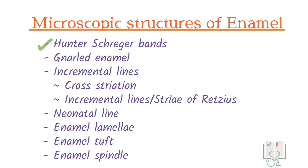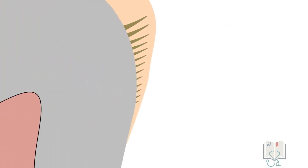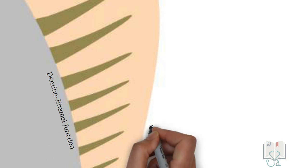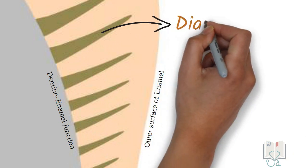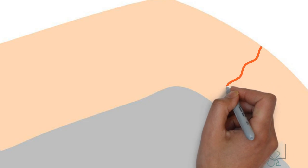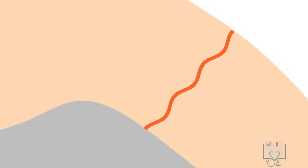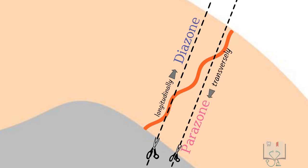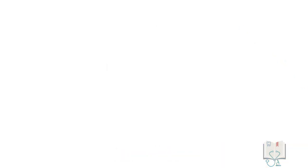Let us start with Hunter-Schreger bands. Hunter-Schreger bands are alternating bands of light and dark areas of varying width. They originate from the dentino-enamel junction and end at some distance from the outer surface. The dark zones are called diazones and the light zones are called parazones. They are formed due to the tortuous course of enamel rods — where rods are cut longitudinally they appear dark, and where cut transversely they appear light. Hunter-Schreger bands can be easily visualized under oblique reflected light.